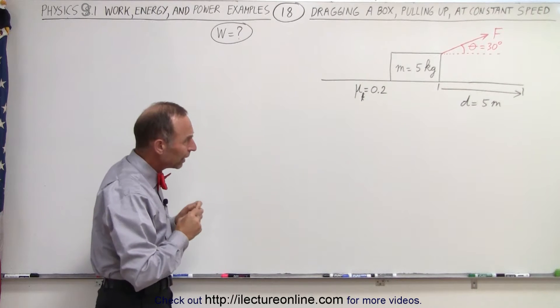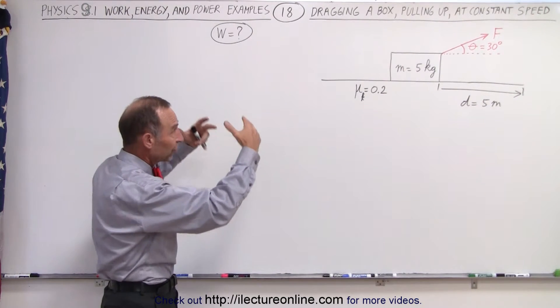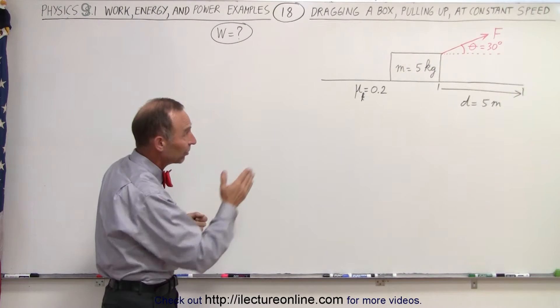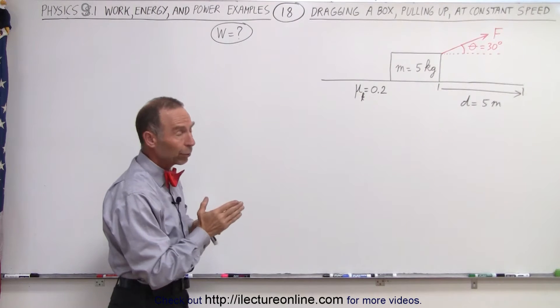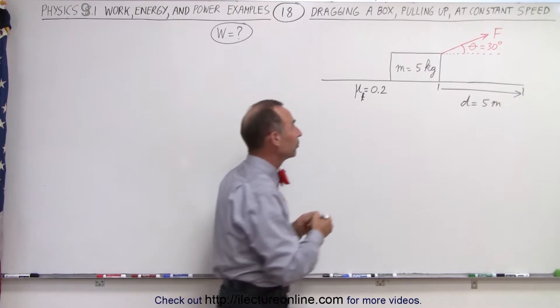So what we should do is first a couple of things. We need to recognize all the forces acting on the 5 kilogram mass, and of course since the force that pulls on the box is directed at an angle, we're going to find the x and y components of that.